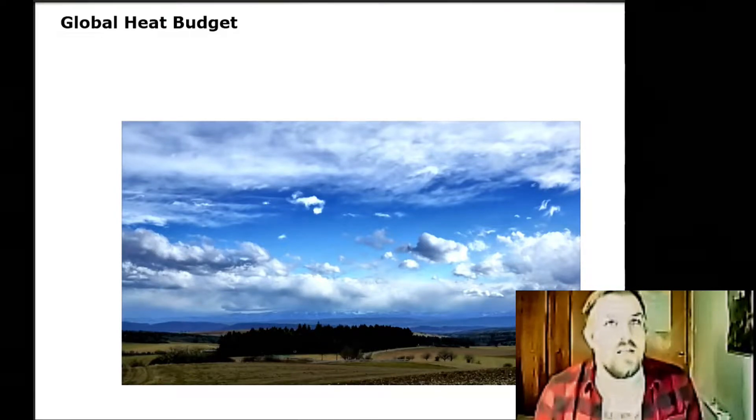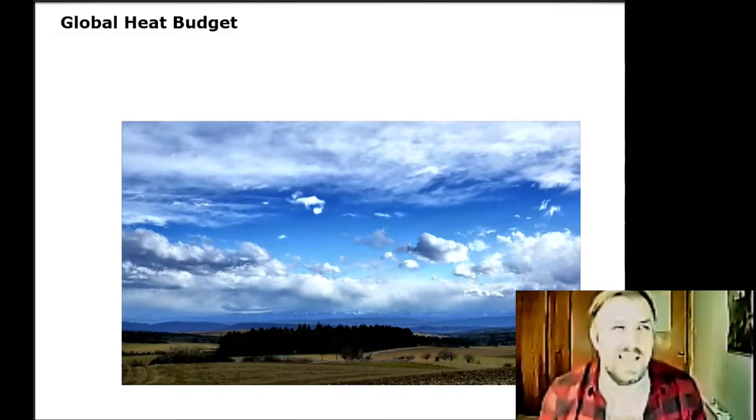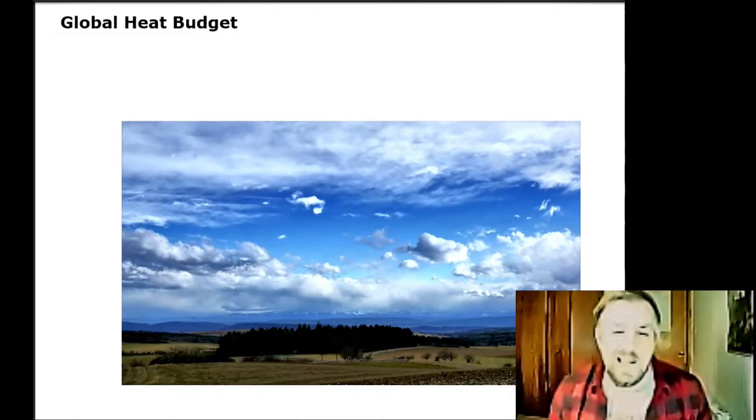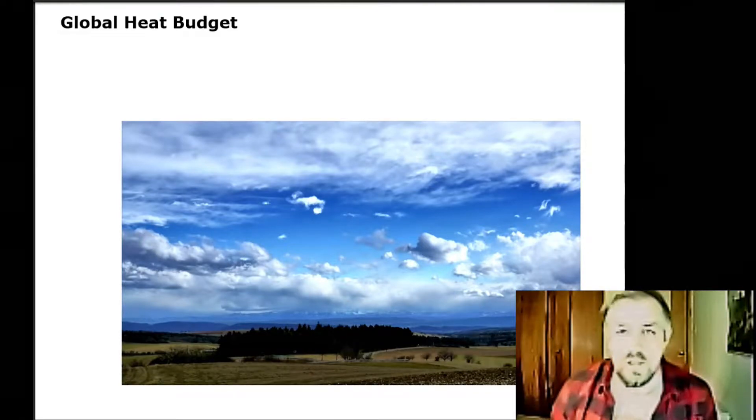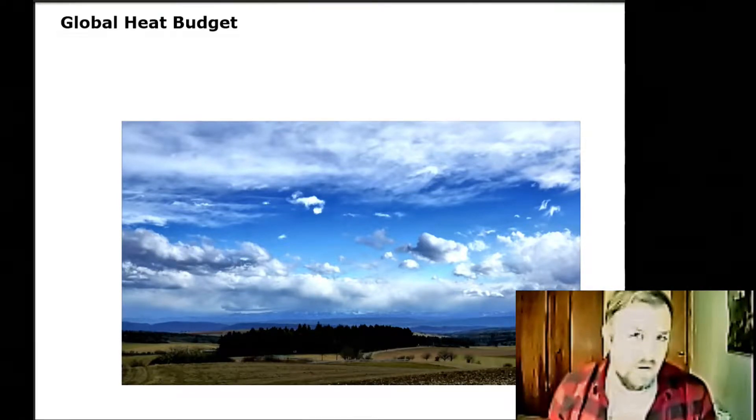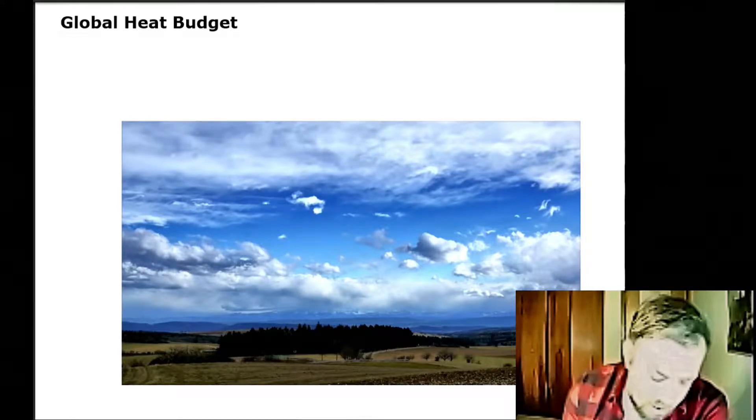So what is the global heat budget? The global heat budget is that the sun gives out 100% energy, but only around 51% of that actually reaches the land. So we're going to look at where that other 49% goes and why it doesn't reach the surface of our planet.